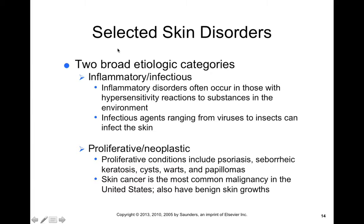We can divide skin disorders into two major categories: inflammatory and infectious disorders, as well as proliferative and neoplastic disorders. Inflammatory and infectious disorders are due to inflammation, which could be due to hypersensitivities or infectious agents ranging from viruses to parasites and insects. Proliferative and neoplastic diseases refer to conditions that cause overgrowth of our skin cells — these may or may not be benign. Skin cancer is one of the most common malignancies in the US, but many people also have benign skin growths, so it's important to differentiate between the two.